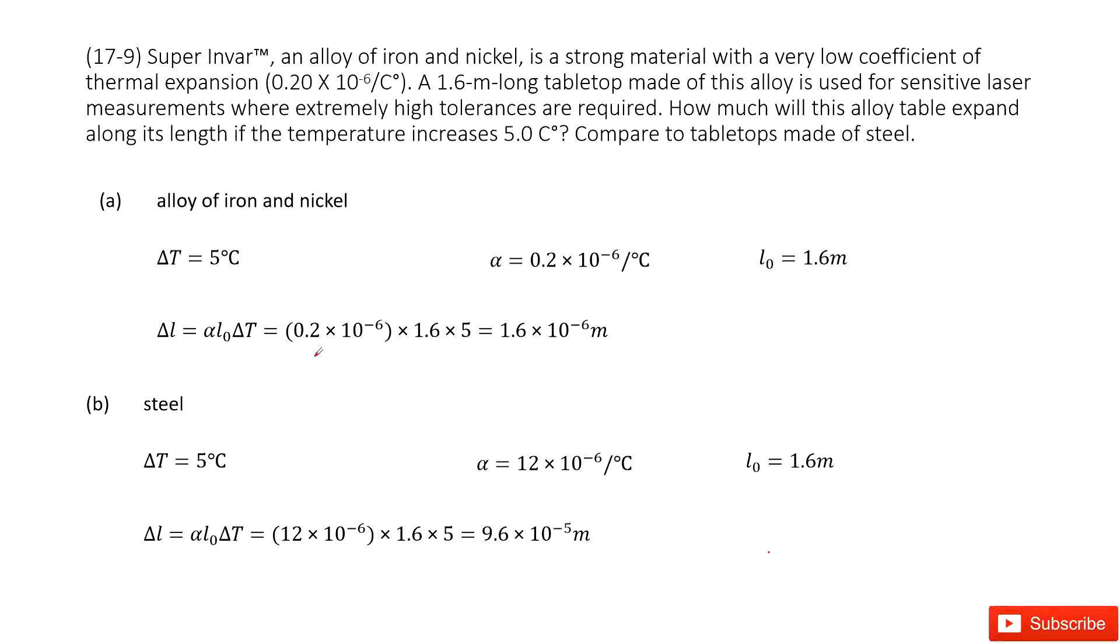Chapter 17 is about temperature, thermal expansion, and ideal gas law. So the first one we look at is the alloy of iron and nickel.